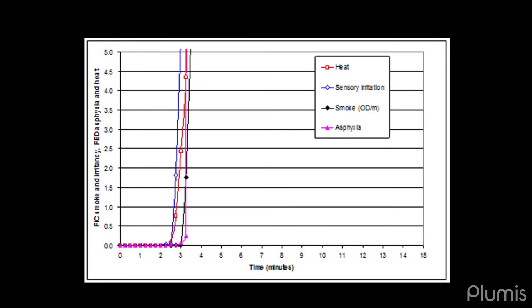Now, on this diagram here, what we're looking for is the time at which any of these curves, the curve for smoke, heat, sensory irritation or asphyxiant gases, the time when any of these curves crosses one on the y-axis. Because that is the calculated time at which each of these hazards reaches a critical level that would incapacitate the occupant and prevent them from escaping from the fire.